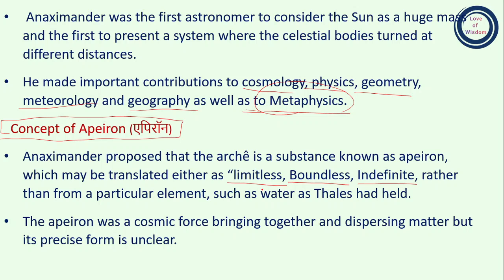Similarly, Anaximander explains the origin and creation of the universe, and for that, he considers the infinite, or Apeiron, to be responsible. The Apeiron was a cosmic force bringing together and disposing matter, but its precise form is unclear. Unlike water, which you can see and perceive in every form, the Apeiron — the infinite — is limitless and boundless; it is not perceivable.